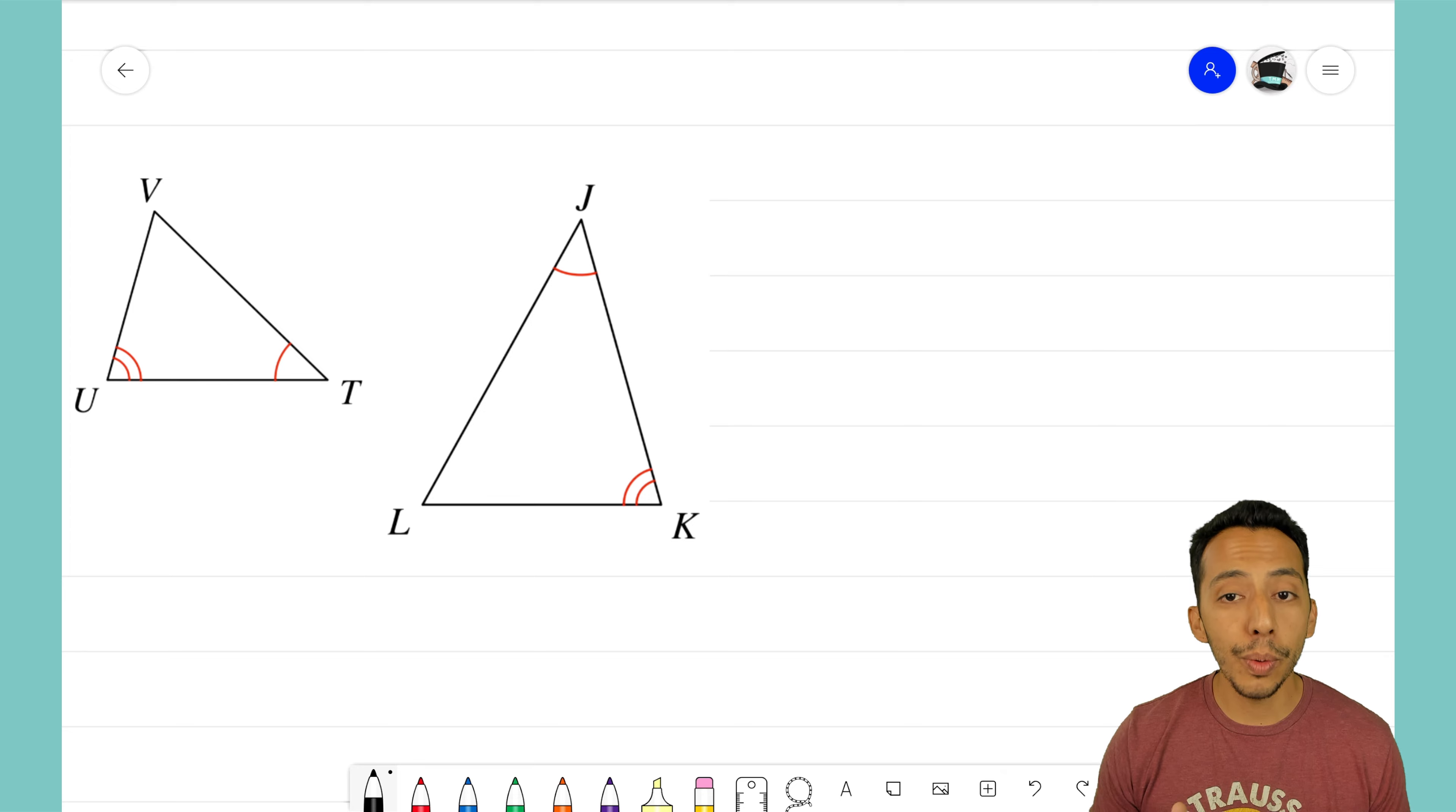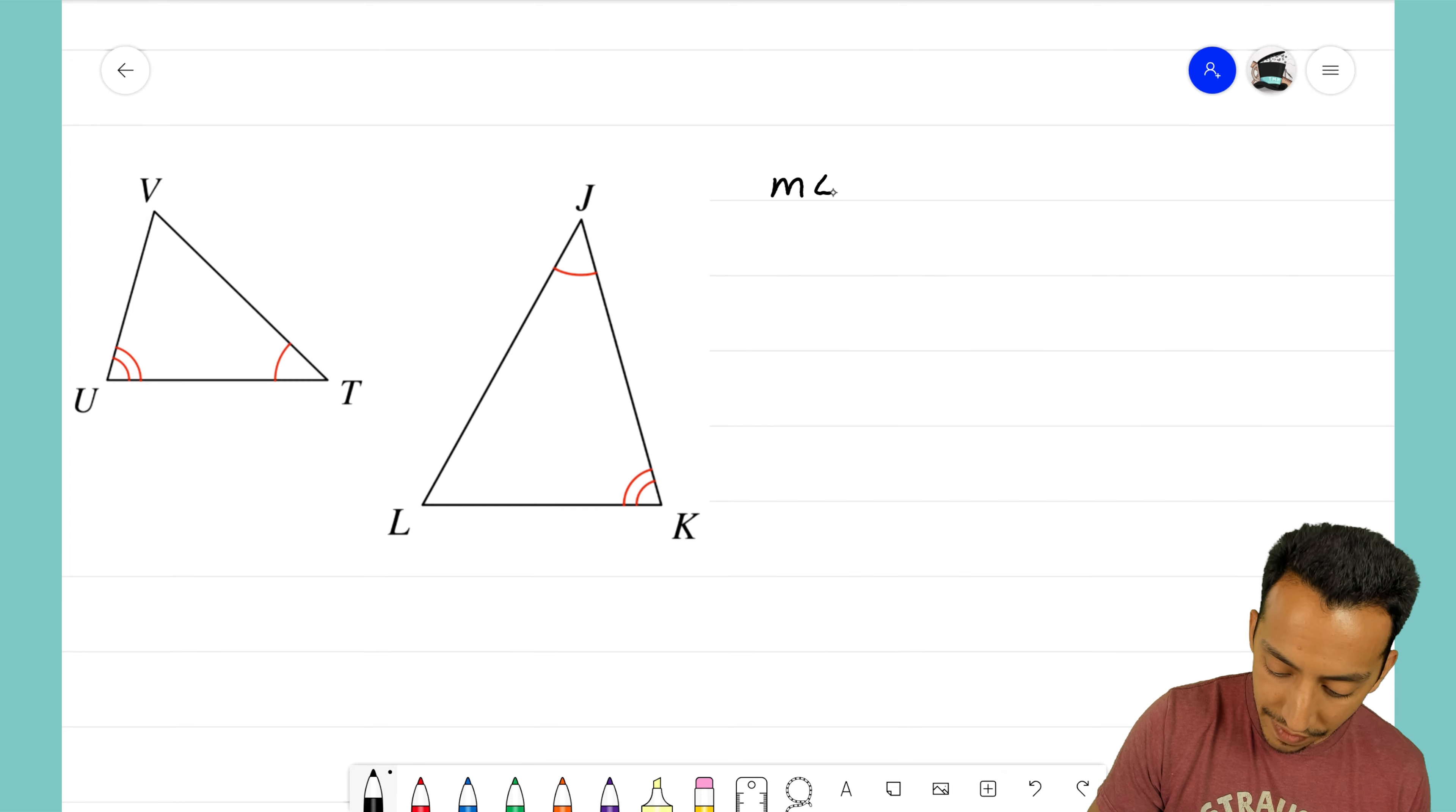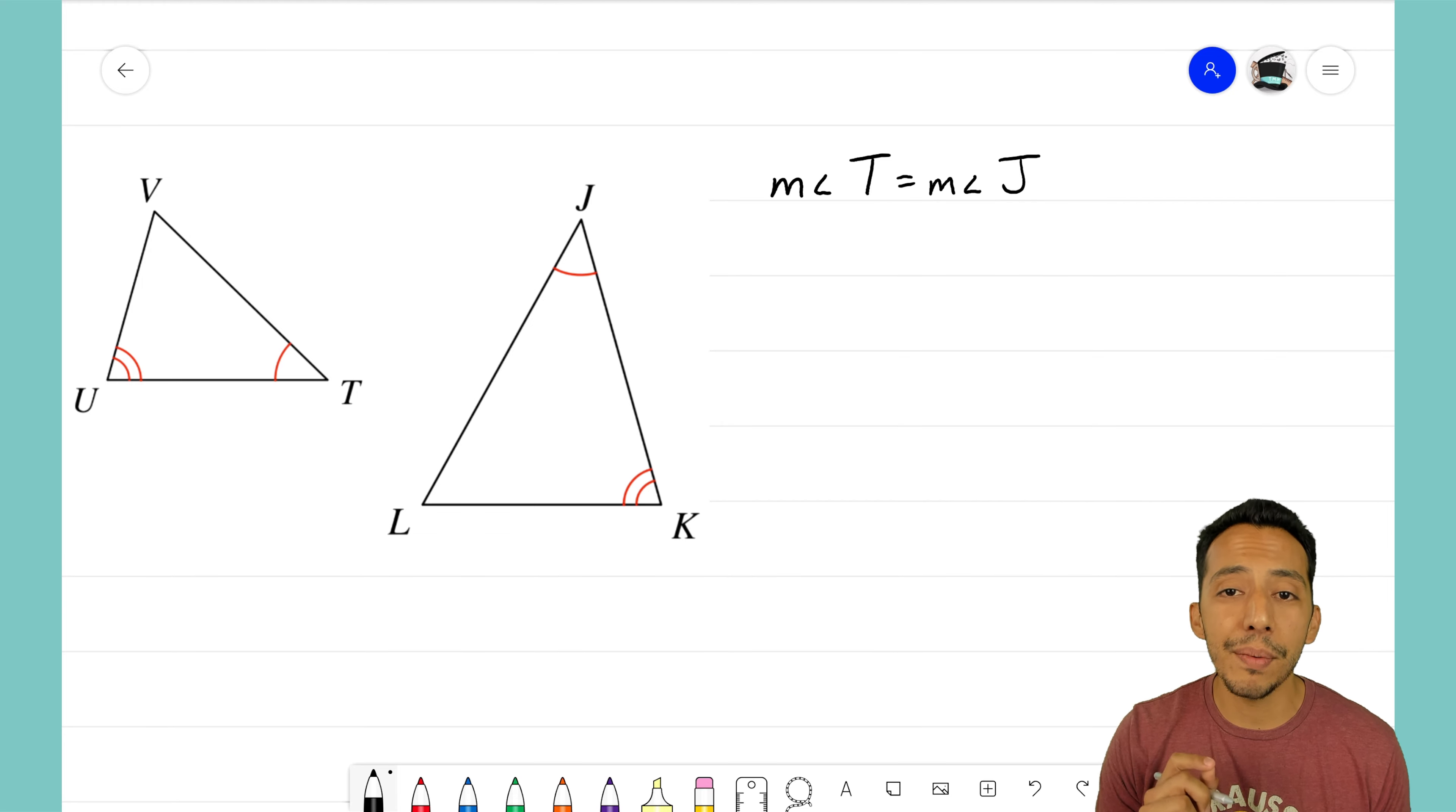I'm going to write it this way: the measure of angle T equals the measure of angle J. That right there is a mathematical sentence with math notation in it. We need to make sure we're writing it that way so we have it all squared away. That reads as m∠T = m∠J. That is a fact that we see from this problem, so I'll put an oval around it. That's our first fact of our flowchart.